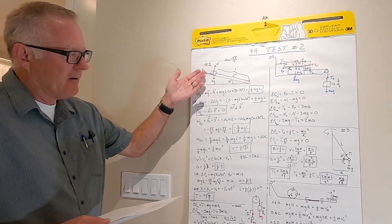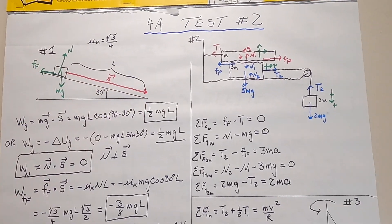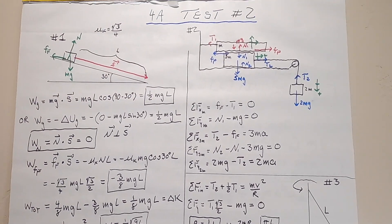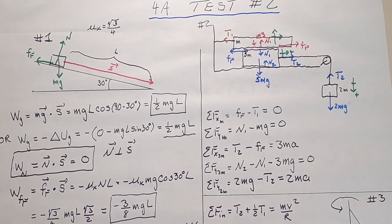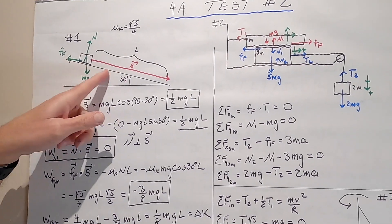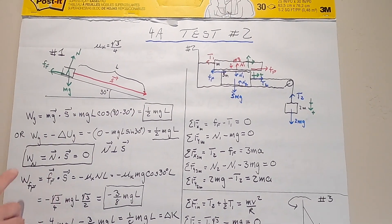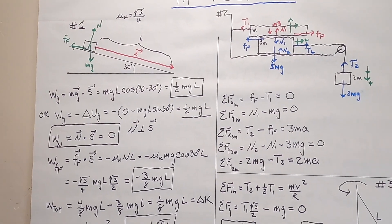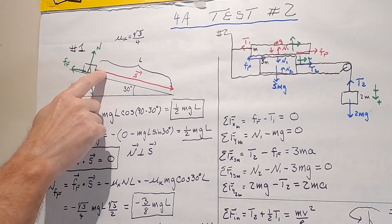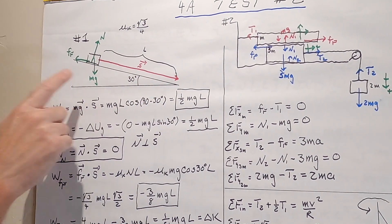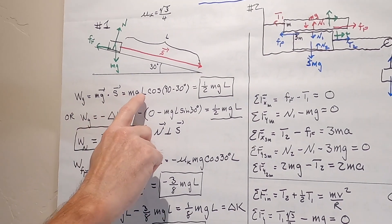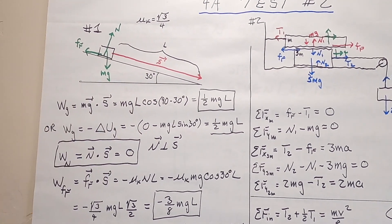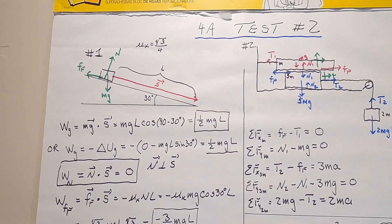It says a package of mass m starts from rest and slides a length l down an inclined plane. I gave you the coefficient of friction, which is the square root of 3 over 4. The first thing I asked was what is the work due to gravity for this block to go down the incline. One way we could have done it is mg dotted with s. mg is this way, s is that way. The angle between them, if that's 30, would be 90 minus 30. So it'd be the magnitude of the first times the magnitude of the second, which is l times the cosine of 90 minus 30, which is just one half. So it's just one half mgl.